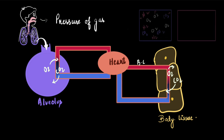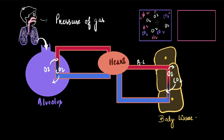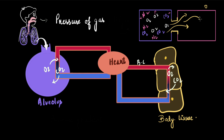Here I have two closed containers — one filled with a mixture of gases and another that is empty. The first has high pressure because gases are exerting pressure on the walls, while the empty one has zero pressure. If I connect the two with a passage, the gases will move into the empty box because gases always move from a region of higher pressure to a region of lower pressure.